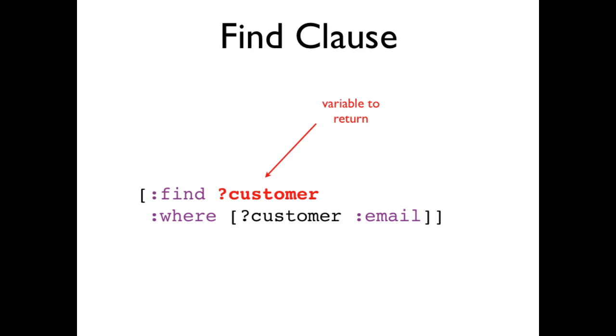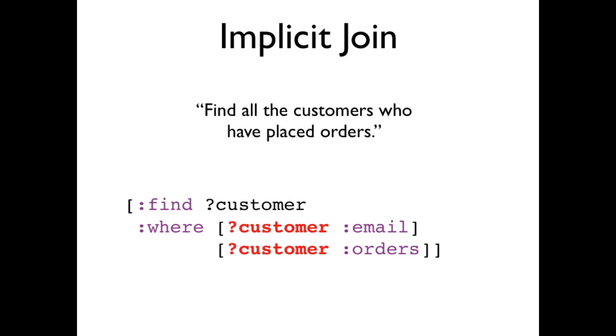The find clause specifies which variables to return. In this example, the where clause binds only one variable customer, and the find clause returns it. If a variable appears more than once in the where clause, it triggers an implicit join. In the customer database, all customers are created with emails, so the email pattern here finds all customers. The orders pattern finds all entities with orders, so the query returns all customers who have placed orders.